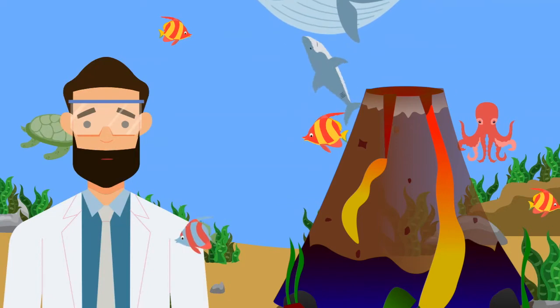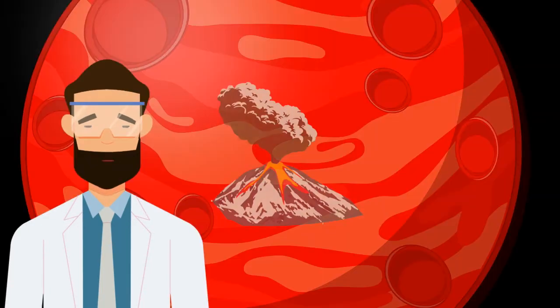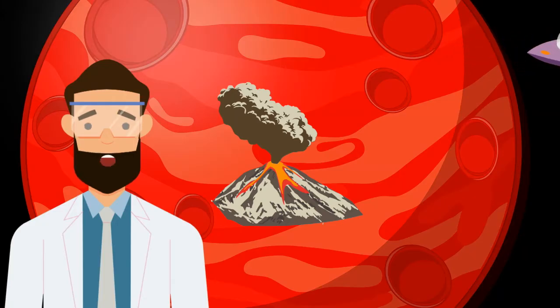Volcanoes don't just happen on land. They can also be found on the ocean floor and under ice caps. There are even volcanoes throughout the solar system. In fact, the largest volcano in our solar system is on Mars: Olympus Mons.